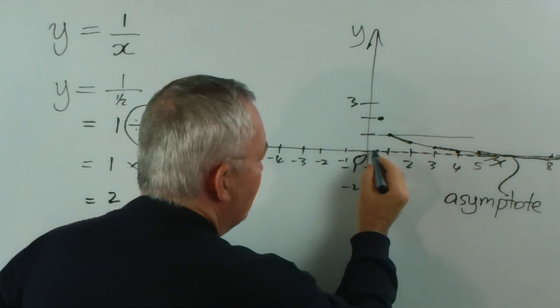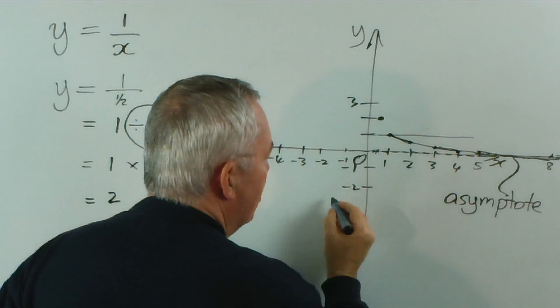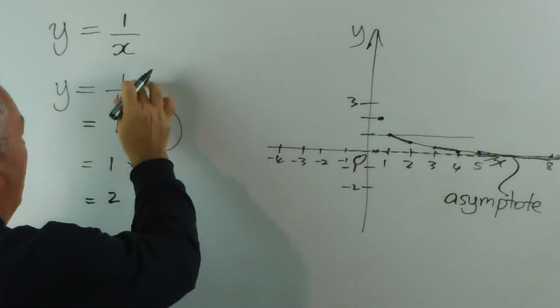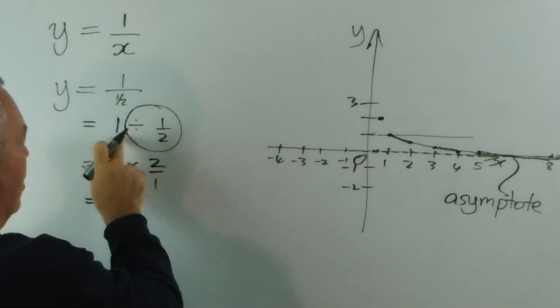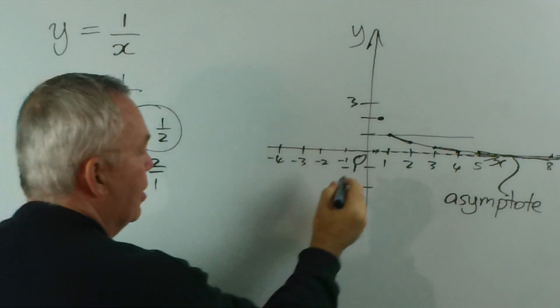In a similar way, when we substitute a value of 1 third, we get 1 divided by 1 third. And following this same procedure, we get a value of 3.